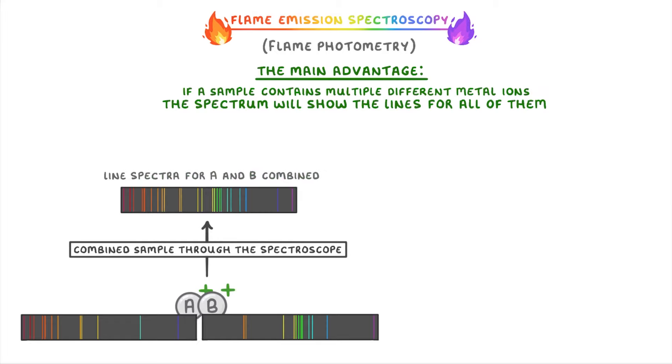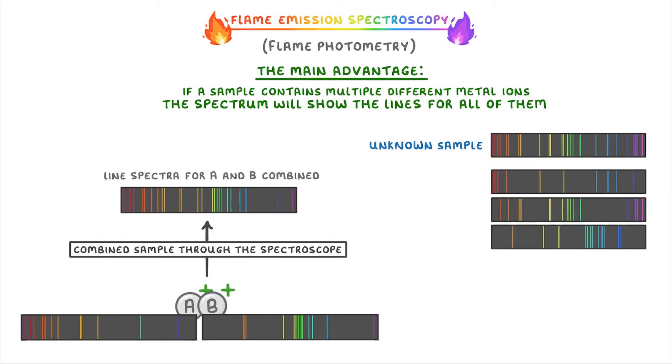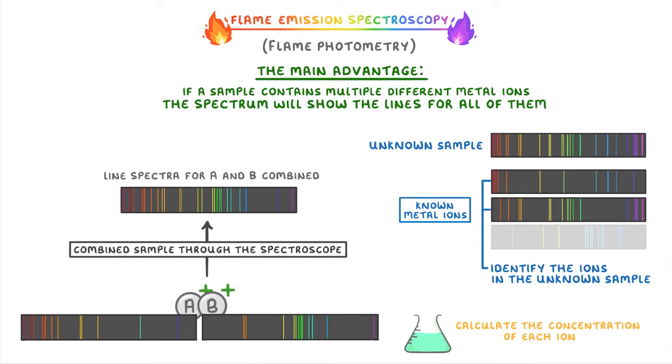This might seem like a bit of a mess, but by comparing the line spectrum of an unknown sample to lots of standard line spectra for known metal ions, scientists, or sometimes computer programs, can identify the ions that are in the unknown sample. And as we said earlier, they can also calculate the concentrations of each ion at the same time.